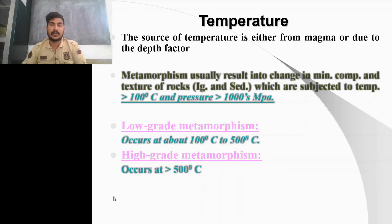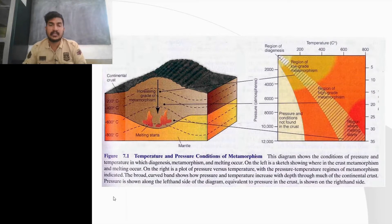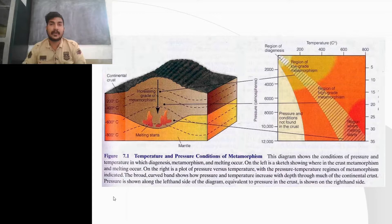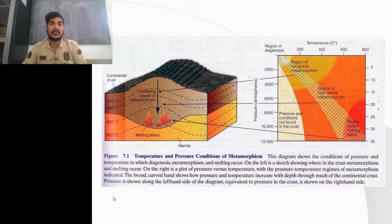Low-temperature metamorphism is known as low-grade metamorphism and high-temperature metamorphism is known as high-grade metamorphism. As seen in the figure, temperature increases as we go deeper. This temperature may be due to pressure-induced heat from the overburden weight, heat from the interior of the Earth, or from radioactive decay. The grade of metamorphism also increases with depth.